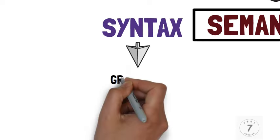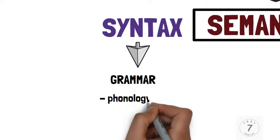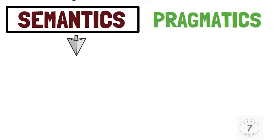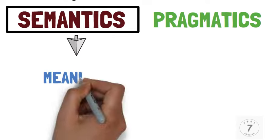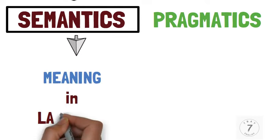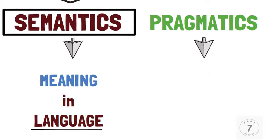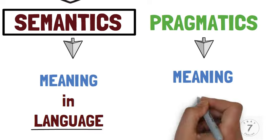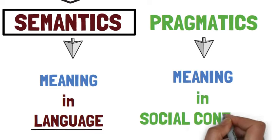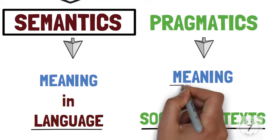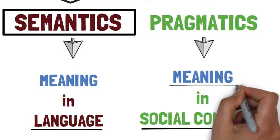Syntax is the study of grammar, including phonology, morphology, and textual grammar. Semantics and pragmatics deal with meaning. Semantics is the study of meaning in language. Pragmatics considers the meaning in social contexts and the ways people produce and comprehend meanings through language, or what people mean by the language they use.